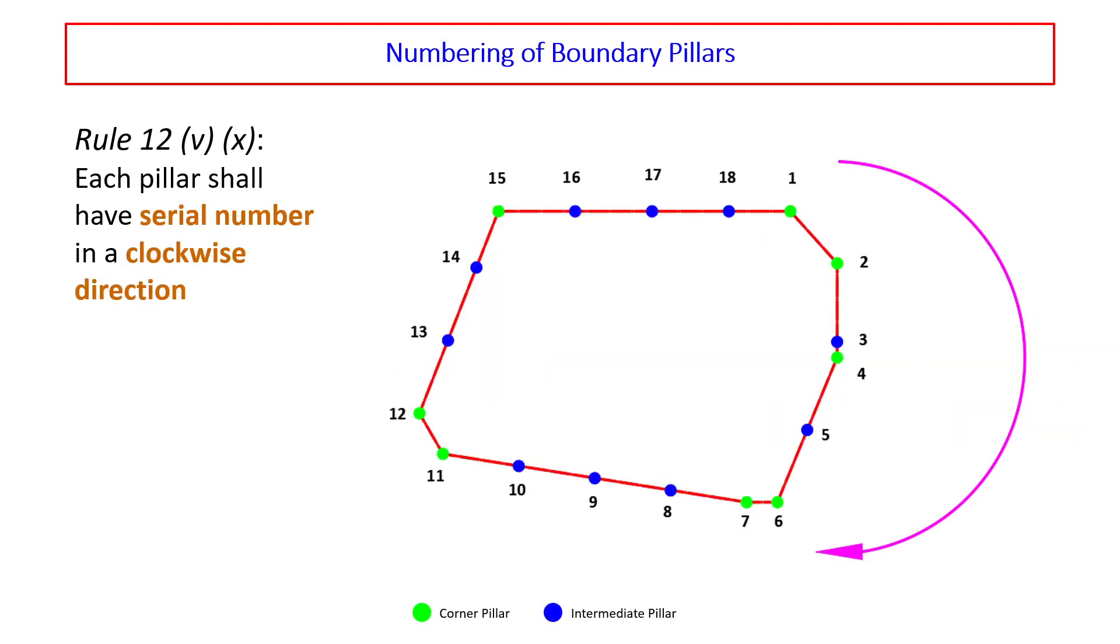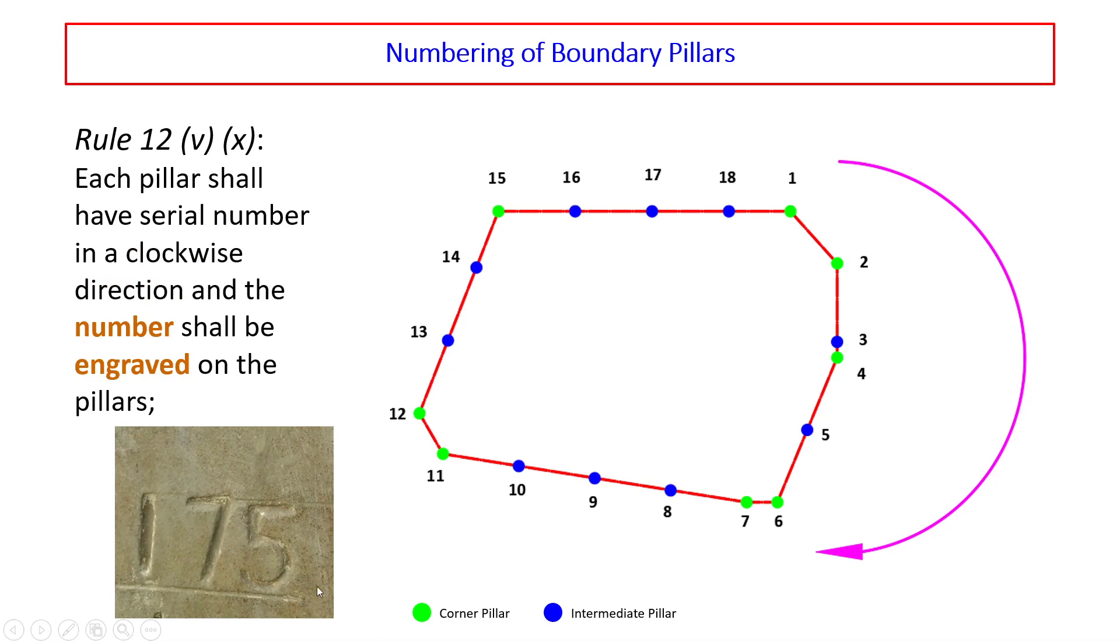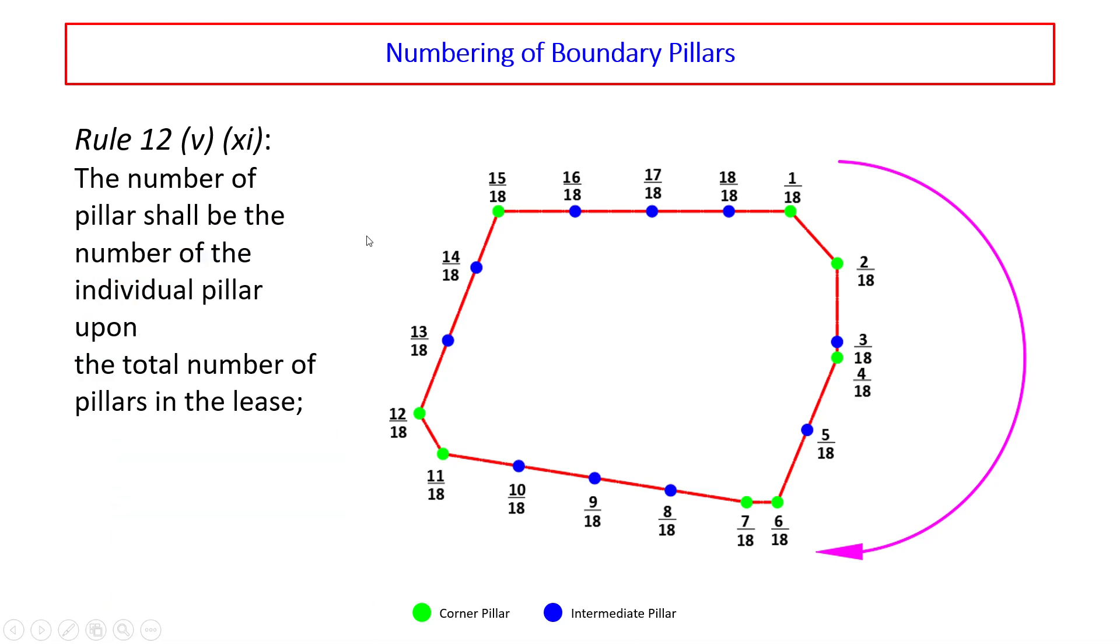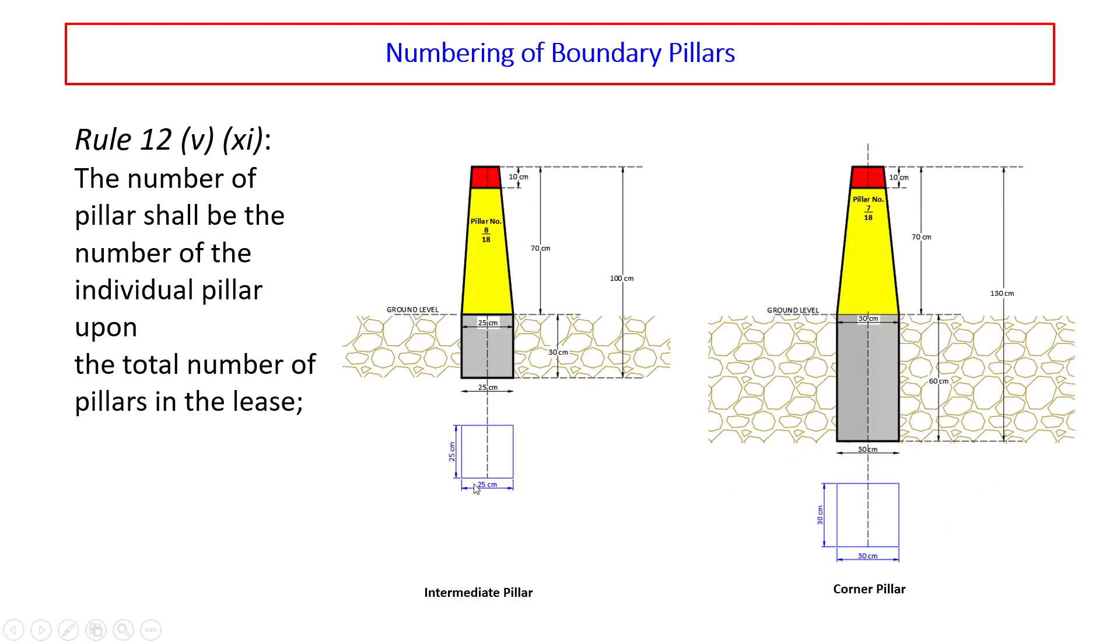How to number the boundary pillars: each pillar shall have a serial number in clockwise direction and the number shall be engraved on the pillars. The number of pillar shall be the number of the individual pillar upon the total number of pillars in the lease. In this example we have 18 pillars so starting from this pillar it will be 1 upon 18, 2 upon 18, 3 upon 18, 4 upon 18 and so on.